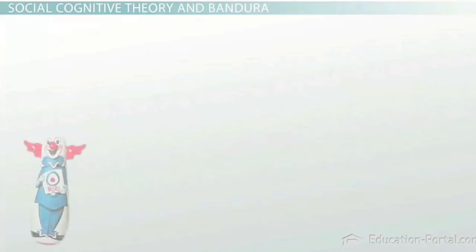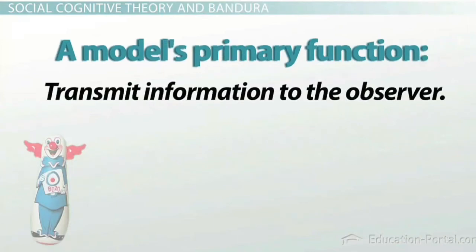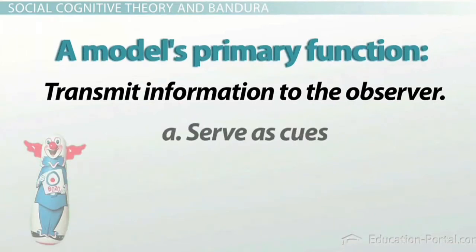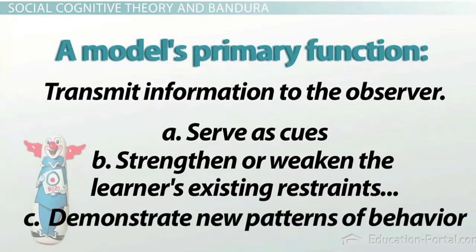Through the Bobo doll experiment and others, Bandura grounded his understanding of a model's primary function, which is to transmit information to the observer. This function occurs in any of three ways. The first is modeled behaviors serve as cues to initiate similar behaviors in others. They also serve to strengthen or weaken the learner's existing restraints against the performance of a modeled behavior. And third, they are used to demonstrate new patterns of behavior.